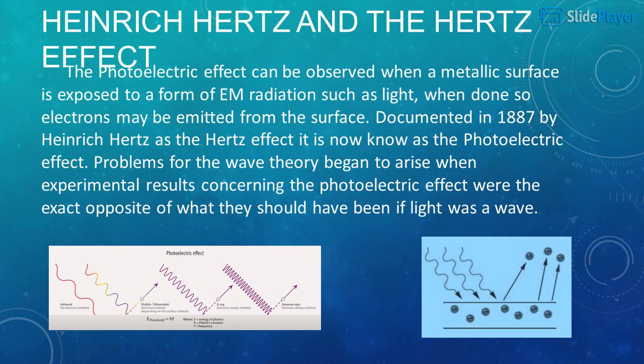Heinrich Hertz and the Hertz Effect. The photoelectric effect can be observed when a metallic surface is exposed to a form of electromagnetic radiation such as light, causing electrons to be emitted from the surface. Documented in 1887 by Heinrich Hertz as the Hertz effect, it is now known as the photoelectric effect.